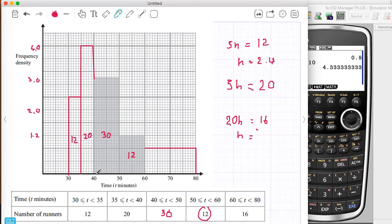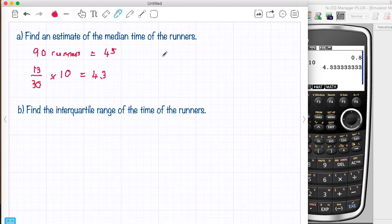Now what I'm going to do with that 4.3 is I'm going to add it on to the bottom of the bar that I know the median is in. So that bottom is 40. So I'm going to add it on to the 40.